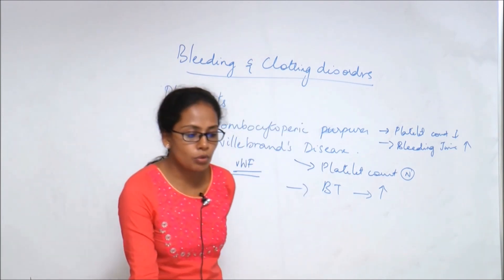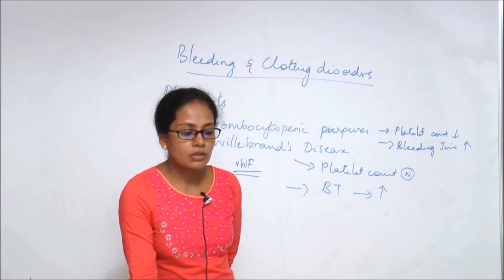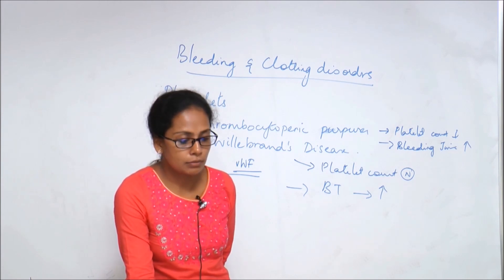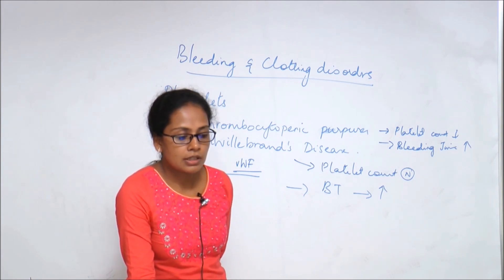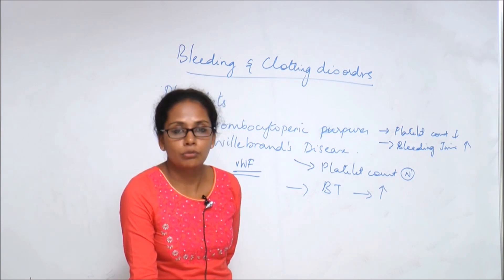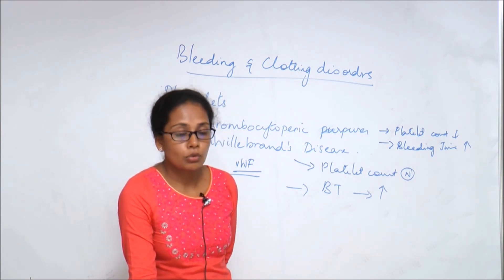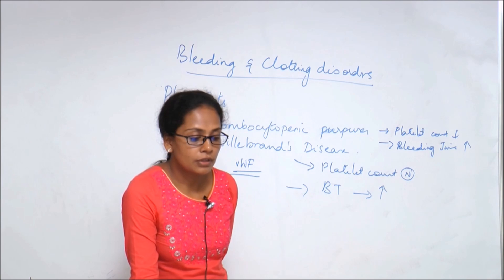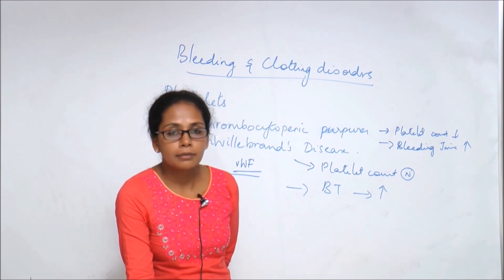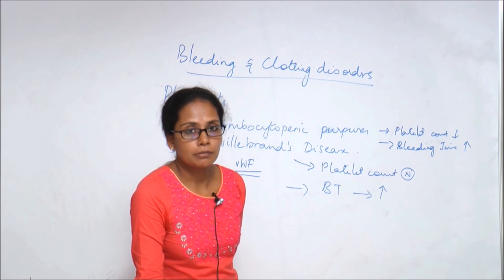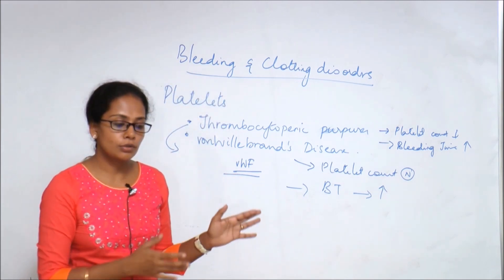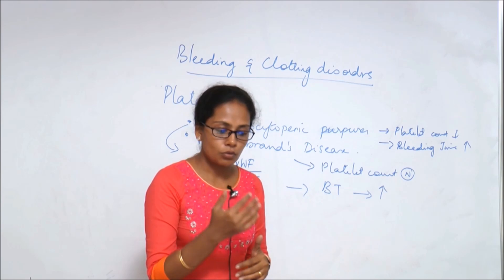A 10-year-old boy developed sudden onset of nasal bleeding and developed purpura in the buccal mucosa. He also gave a history of increased bleeding from minor cuts and wounds. His platelet count is around 45,000 cells per mm³ of blood, and the bleeding time was 15 minutes.